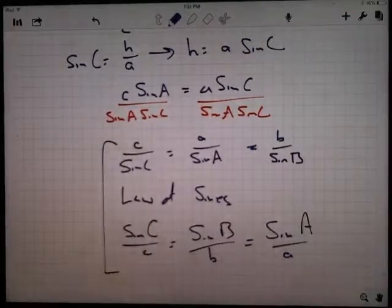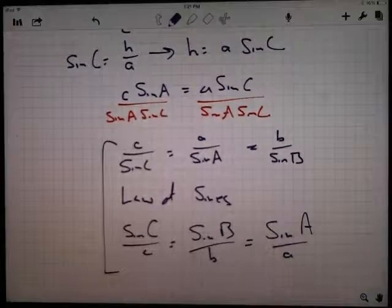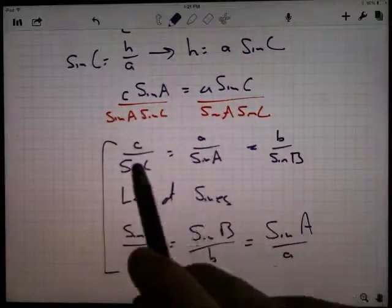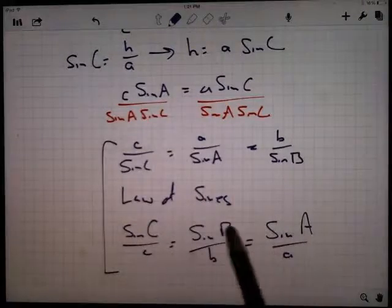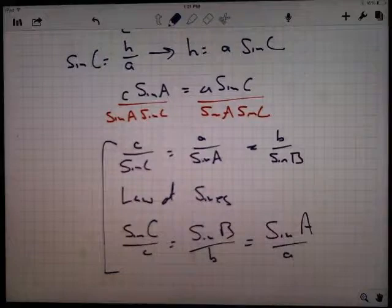Law of sines written two different ways depending on what we're going to do. If we're trying to figure out side lengths, I'd probably use these because all the side lengths are on top. If I'm trying to figure out angles, then I'd probably use it like this because all the angles are on the top. I'll show you some examples in a subsequent video.